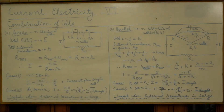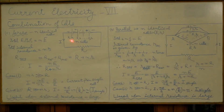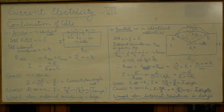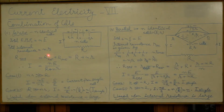If you have n identical cells each of EMF e and internal resistance r joined in series, the EMF provided by the cells will be added — that is, the total EMF of the combination will be ne. For two cells it will be 2e, for three cells 3e, for four cells 4e, and so on. All the internal resistances are joined in series, so the total internal resistance will be n×r.